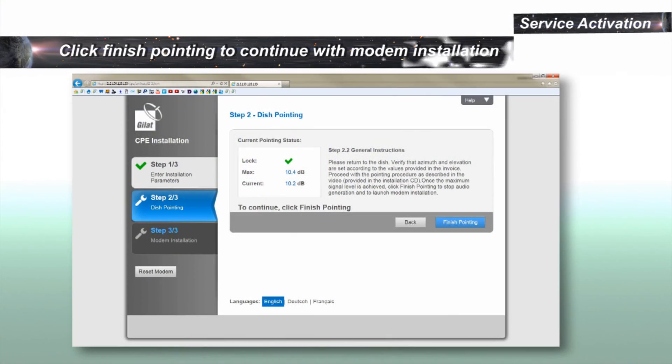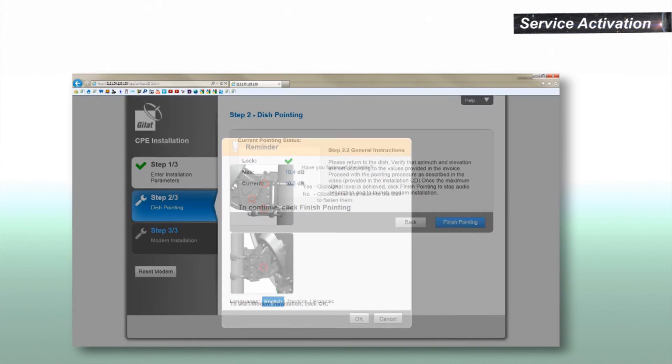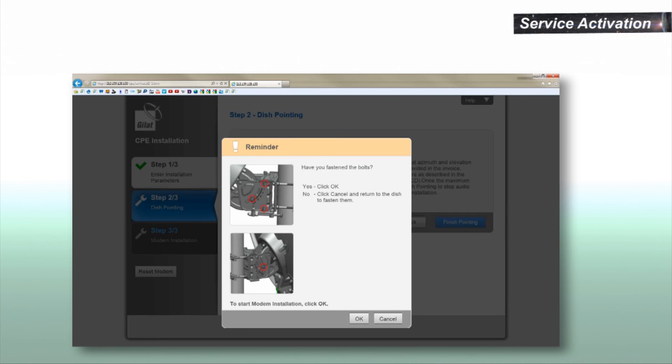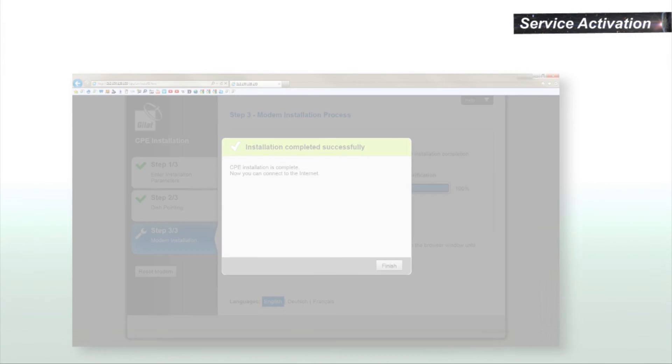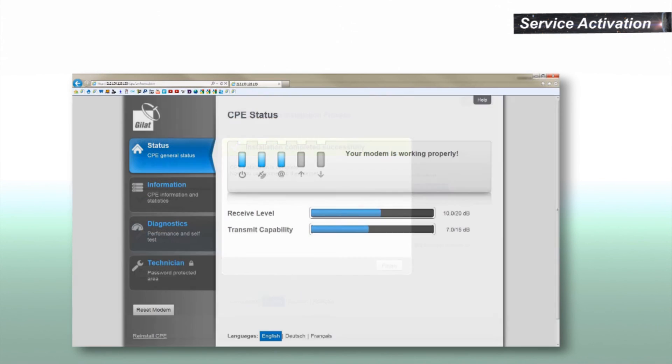To finish the modem installation, click Finish Pointing. The screen will change. Click Next. The screen will change again. The modem will run through a five-step installation procedure, which can take up to five minutes. The last screen should be installation finished successfully. Click Finish.